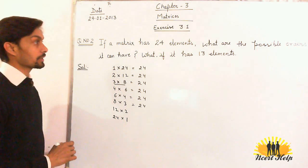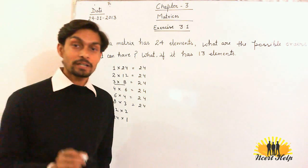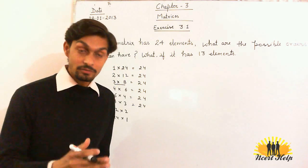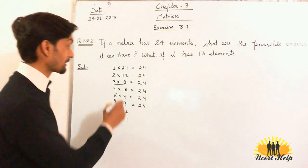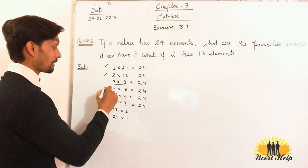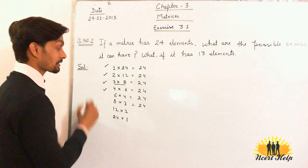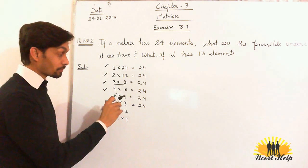So how many possible orders of a matrix if it has 24 elements? Just find the possible factors of 24. The factors are 1 into 24, 2 into 12, 3 into 8, 4 into 6. And also, we have to reverse, because by reversing, the number of rows and number of columns are reversed.